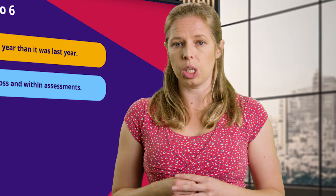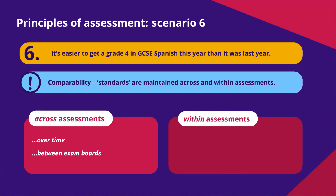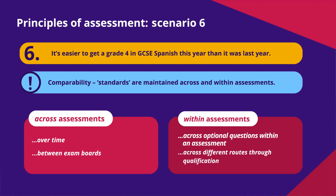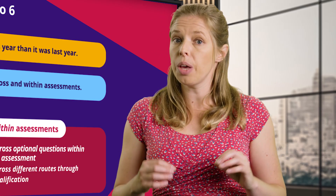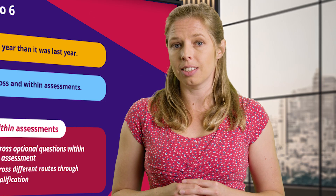The other aspect of comparability is across optional routes — where a question paper has optional questions or optional papers within the qualification. We need to make sure students would get the same grade regardless of which optional route they take, and that those routes are comparable in difficulty and demand. That's something we really focus on when writing assessments.